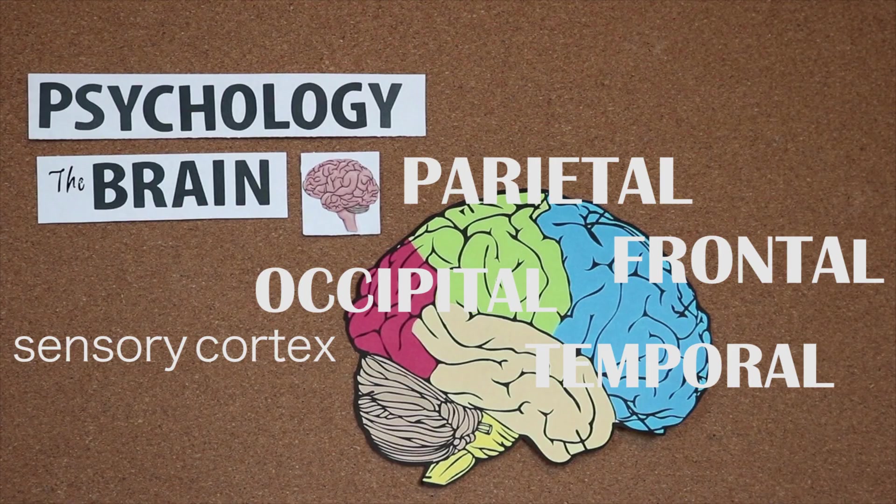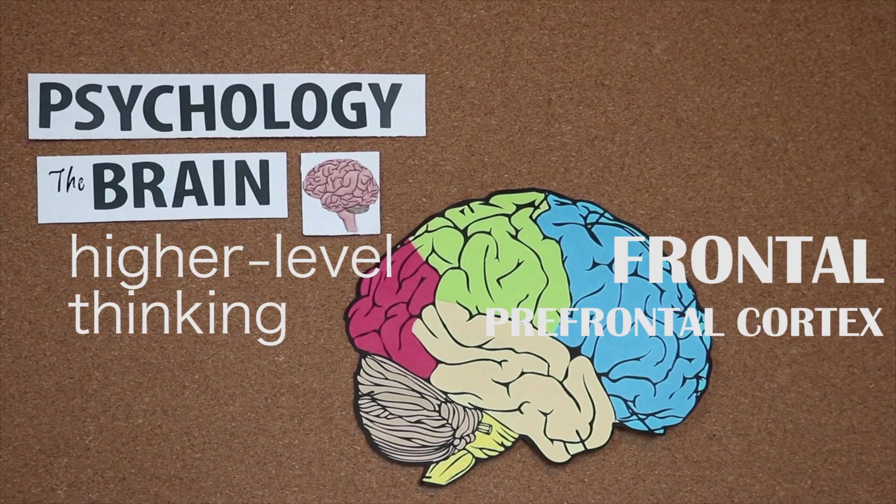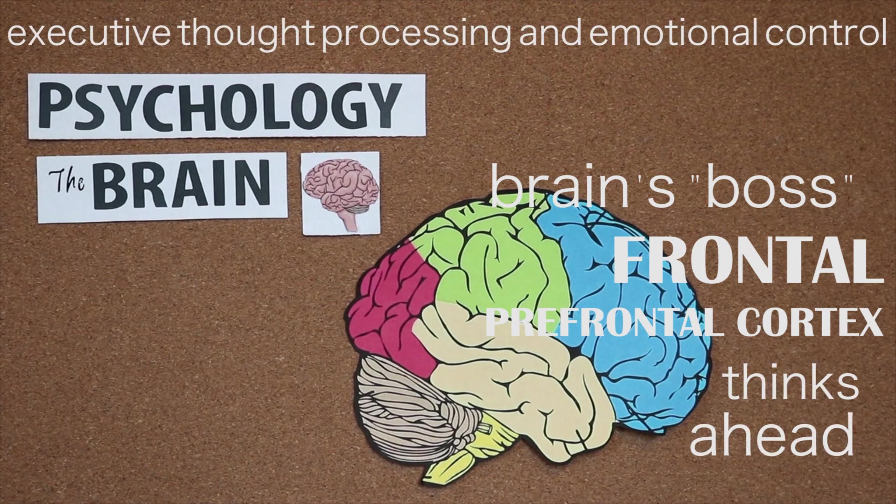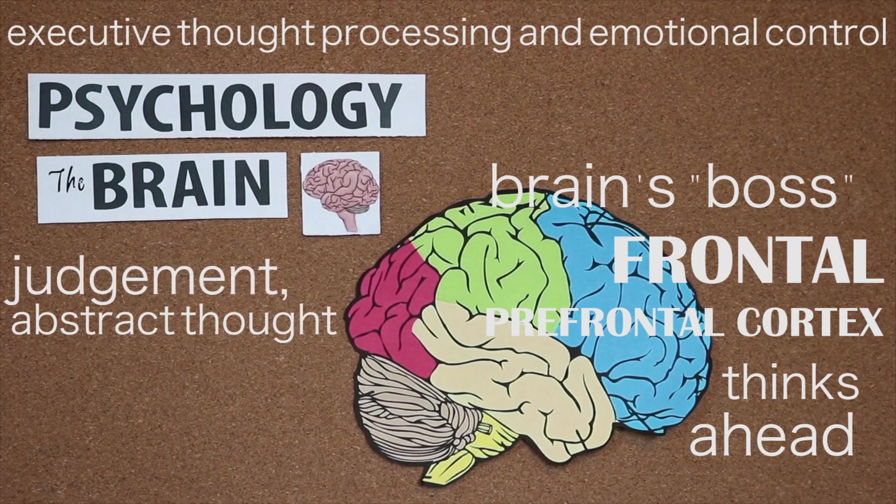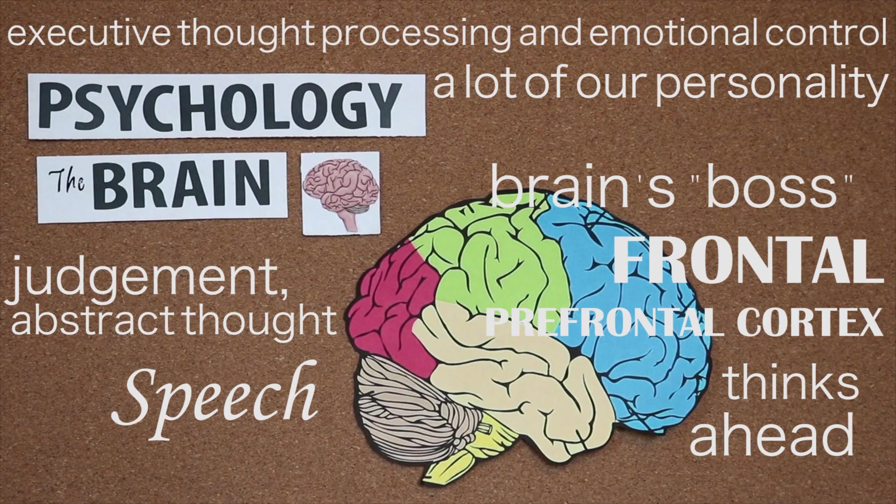What comes in is your sensory cortex and what goes out is your motor cortex. In the frontal lobe, higher level thinking takes place. Living right behind your eyes is your prefrontal cortex, which can be thought of as your brain's boss of sorts. It's associated with executive thought processing and emotional control. It thinks ahead to pursue success and to foresee consequence. It allows for judgment, abstract thought, a lot of our personality.